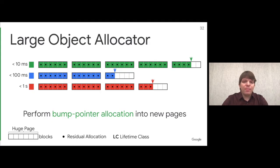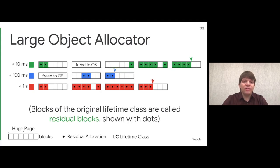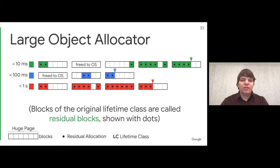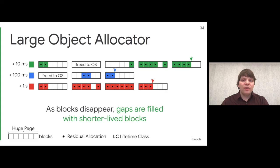Over time, objects will free up and you'll end up with gaps between initially allocated blocks. When a page frees up completely, you can return it to the operating system, but often you'll have pages with some live blocks but otherwise free. If we didn't use those free blocks, our allocator would incur significant internal fragmentation. So we need to reuse these blocks. We keep track of blocks initially assigned to a page, called residual blocks, shown with dots in this diagram.